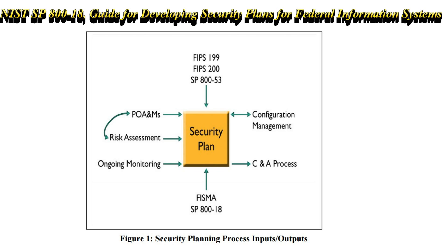Once we have documented all the security controls in the System Security Plan, we want to get it authorized. The reason it has to be reviewed and authorized by a higher level of authority — maybe by the authorizing official's office — is that there might be some controls we couldn't implement because they would break our system. We have to tell upper-level management that this control couldn't be applied and why, and either suggest they accept the risk or explain that we have mitigated and reduced the risk of that particular control.